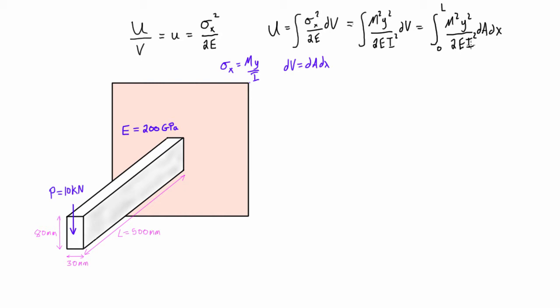We'll pull that out, so we'll have from 0 to L we have M squared over 2EI squared, and then we'll just throw this in brackets here. So we'll just have a little integral sign there, we'll have y squared dA and dx. Well, it turns out also if you remember from previous videos that the integral of y squared dA is equal to the moment of inertia.